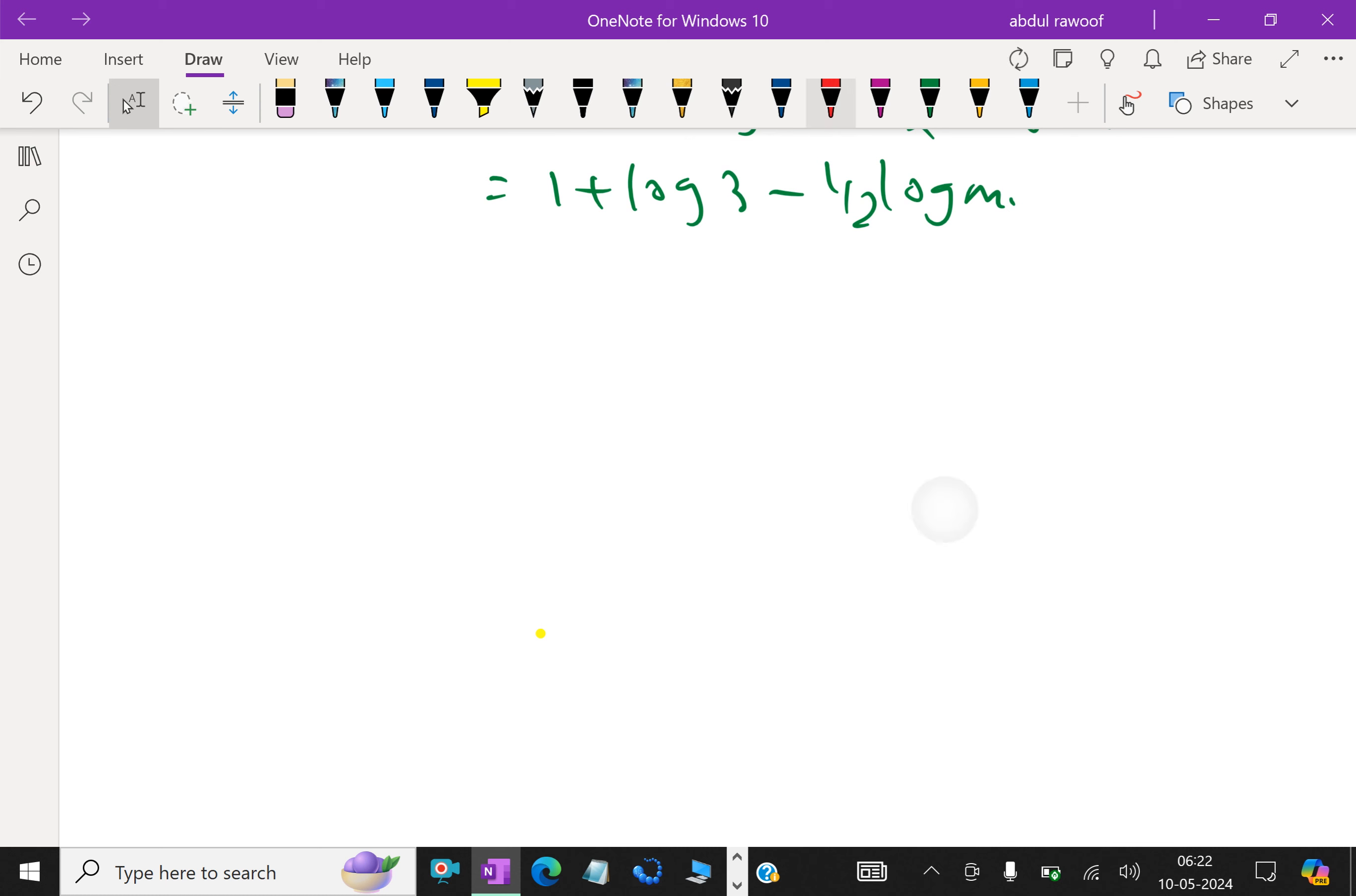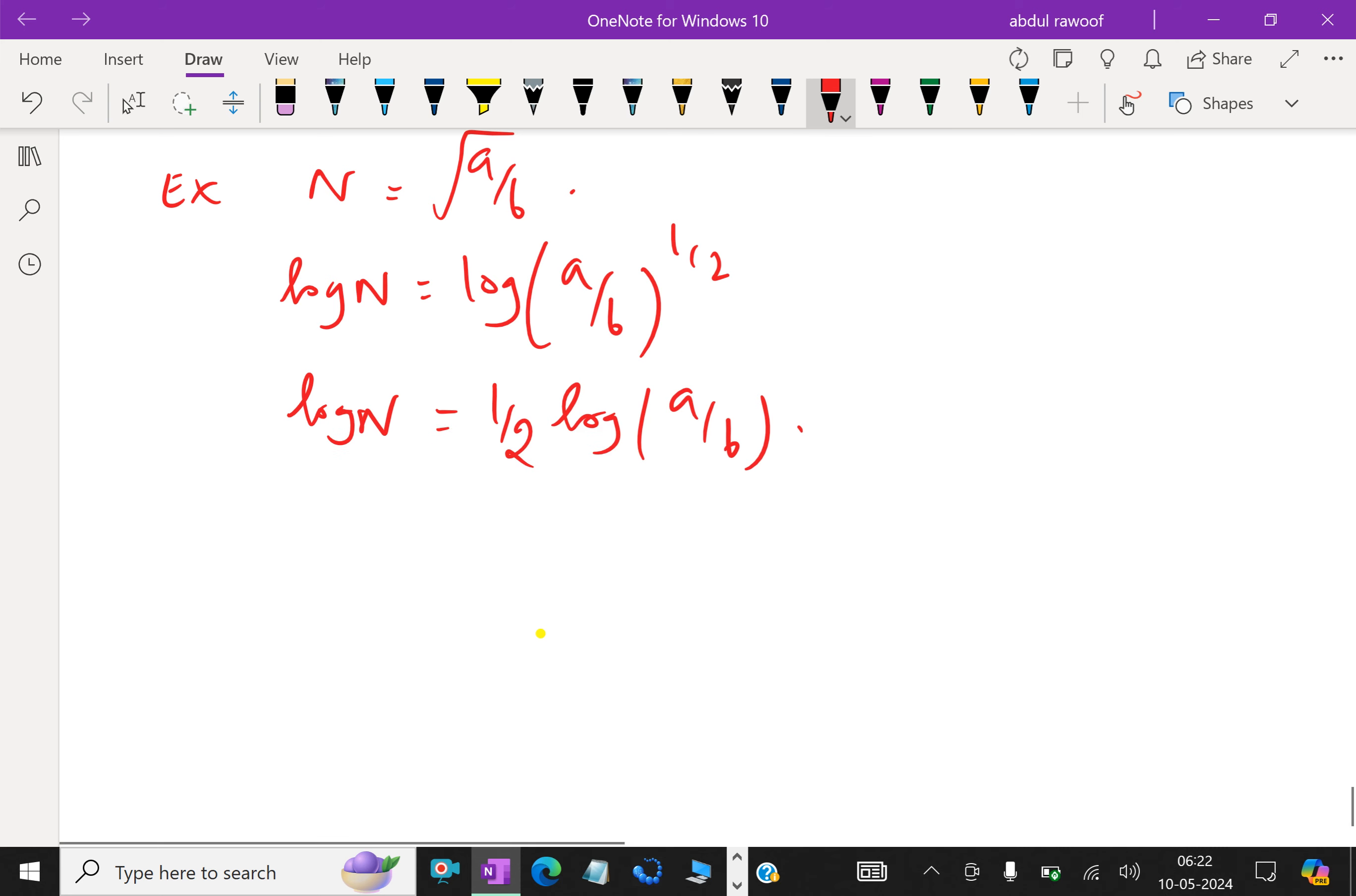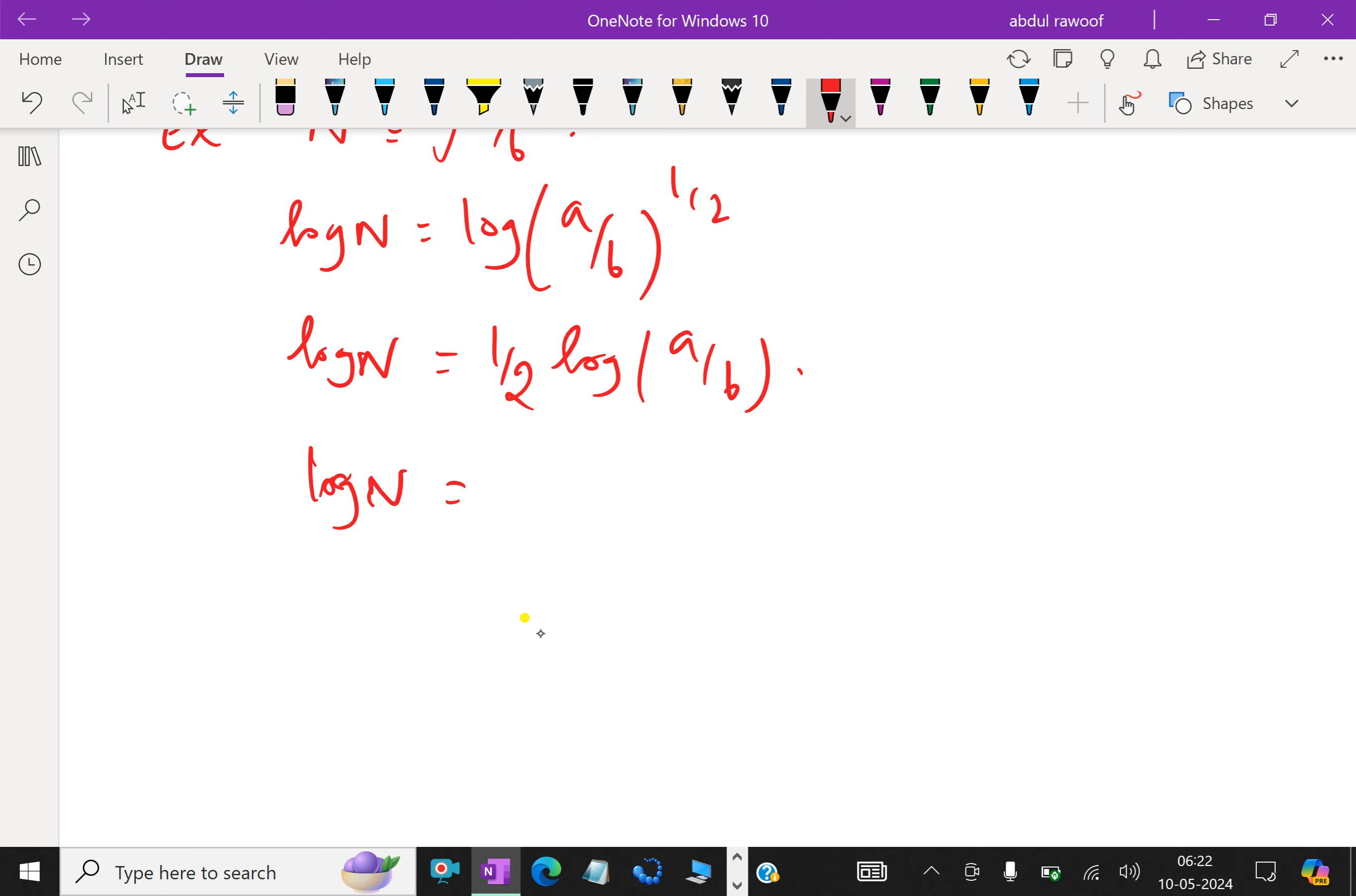Now let us do more examples. n equals square root of a over b. Taking log of both sides, log n equals log of (a over b) to the power half. Therefore, log n equals half log(a over b), which further equals half log a minus half log b.